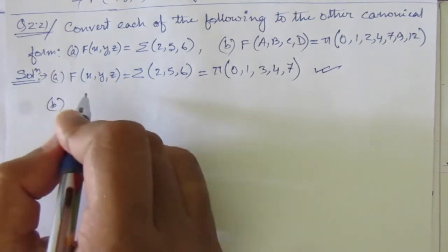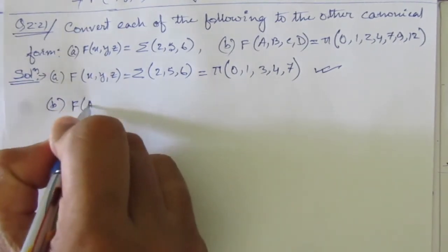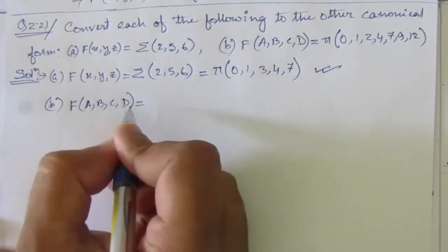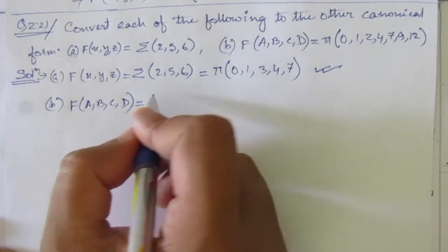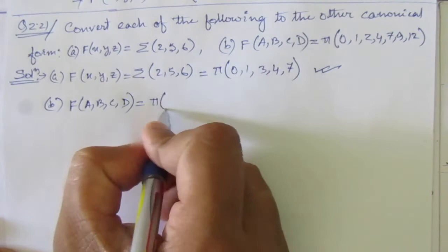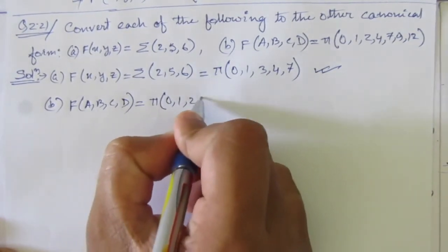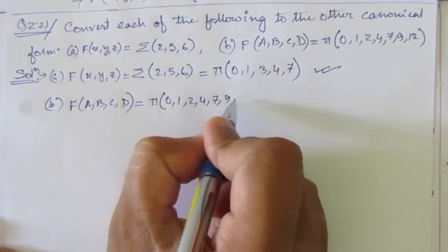Then the second part, we have f(a, b, c, d) - it is a four variable function. We are given in product of maxterm form that is 0, 1, 2, 4, 7, 9, and 12.